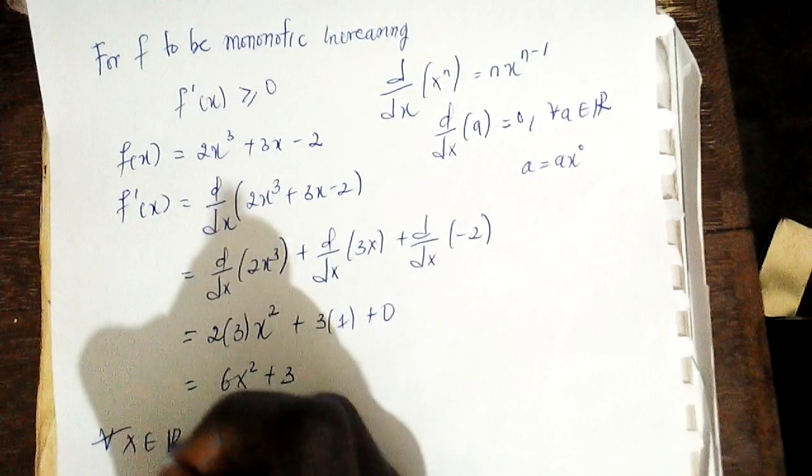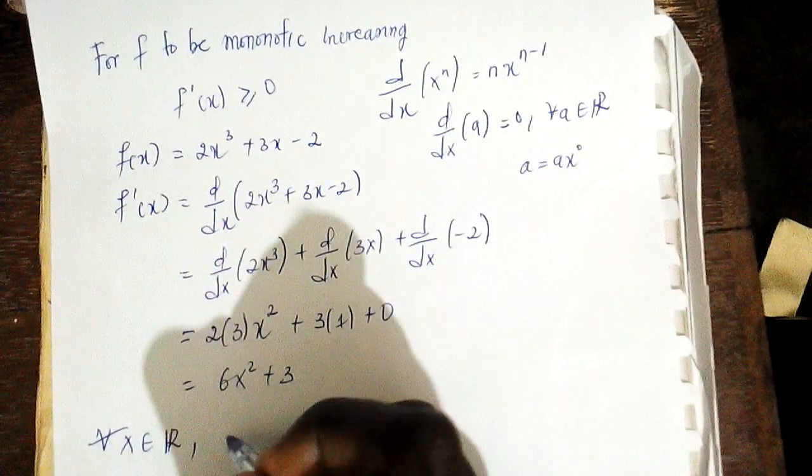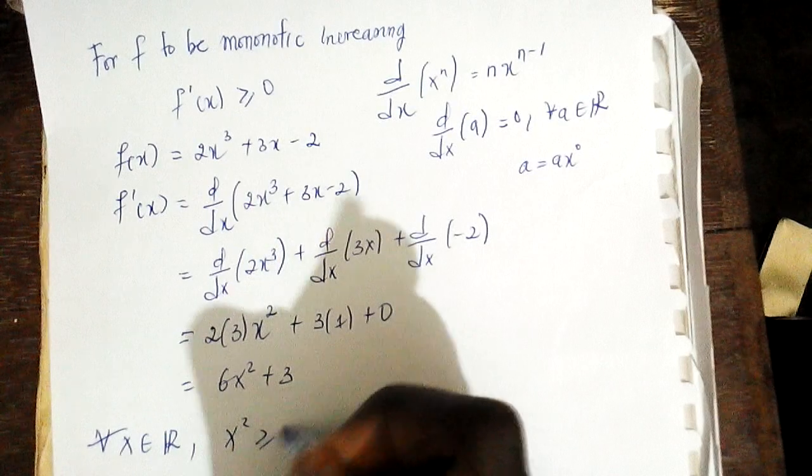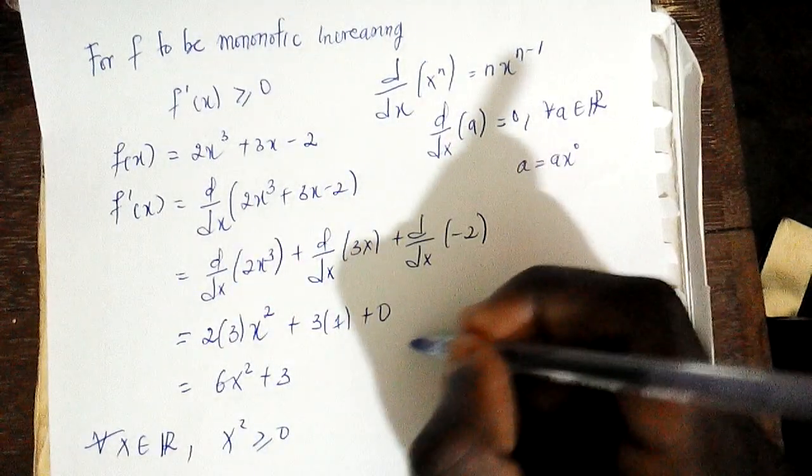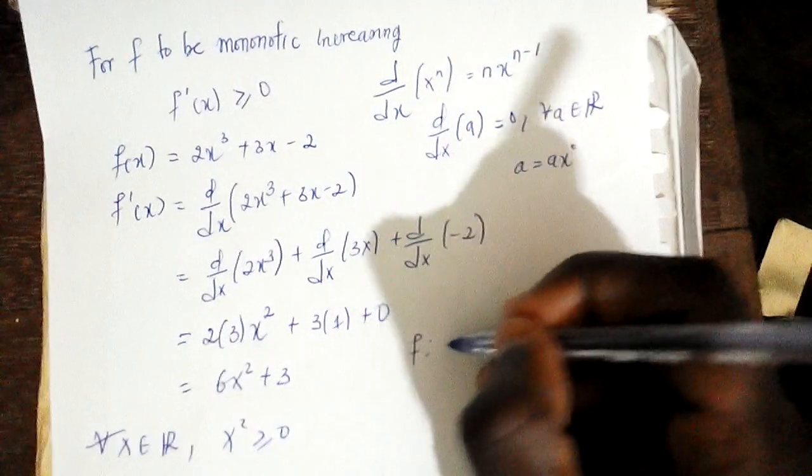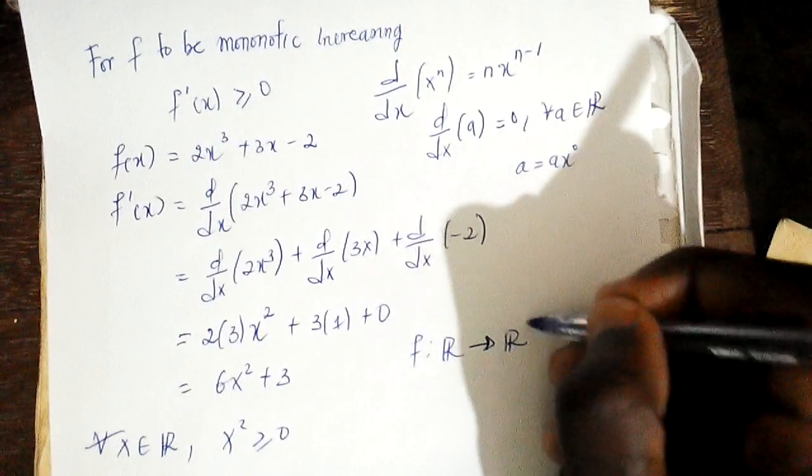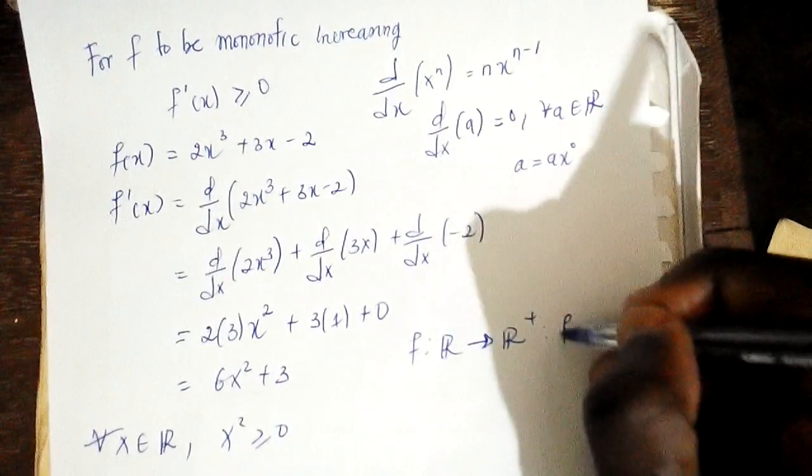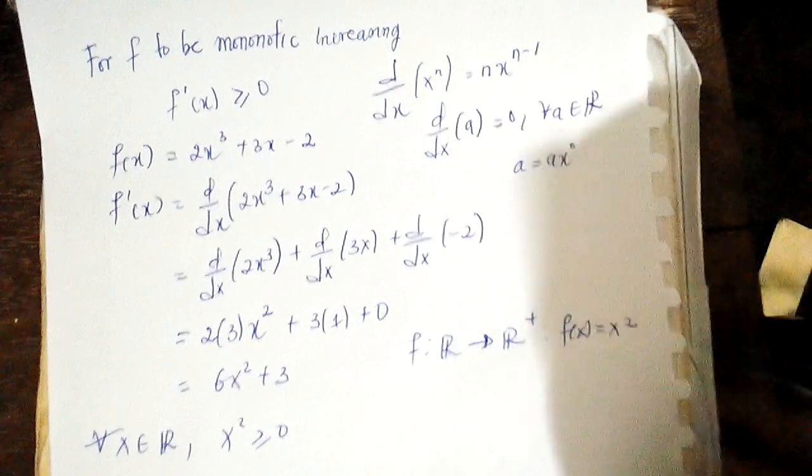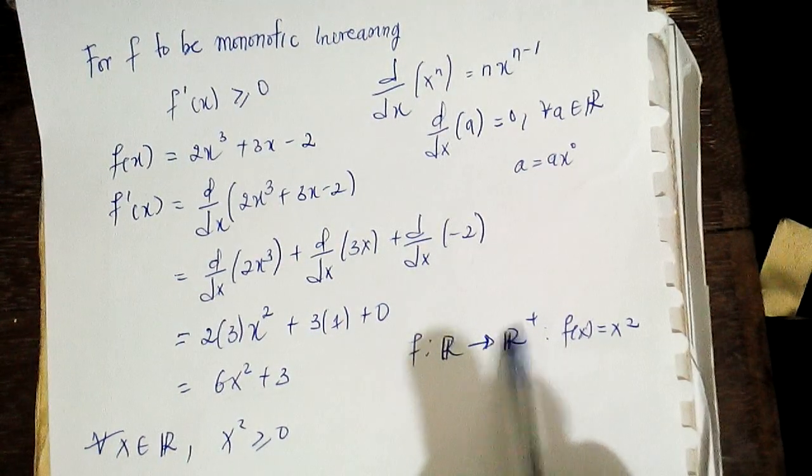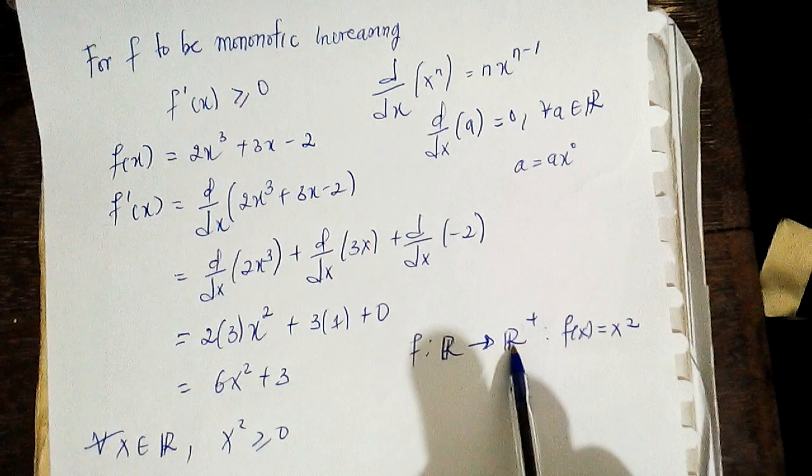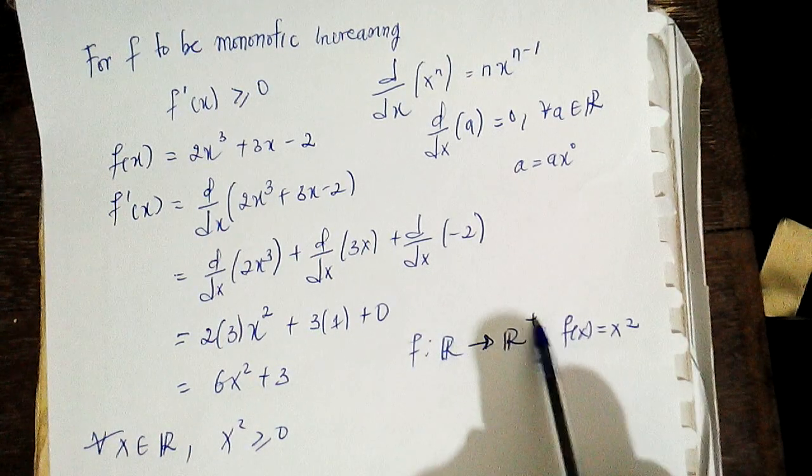The function f(x) = x², with domain R and range R⁺, is always non-negative. Whenever you square a real number, whether it is positive or negative, the result will always be positive or zero (when x = 0).